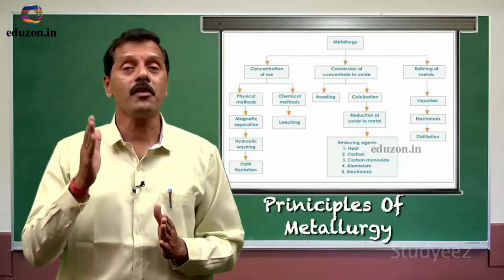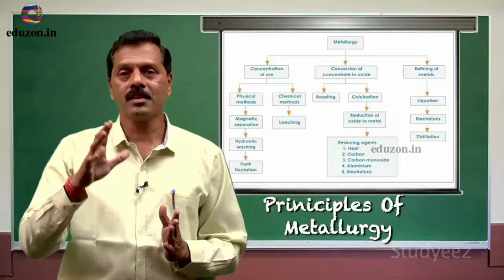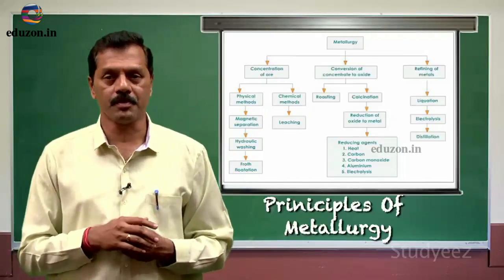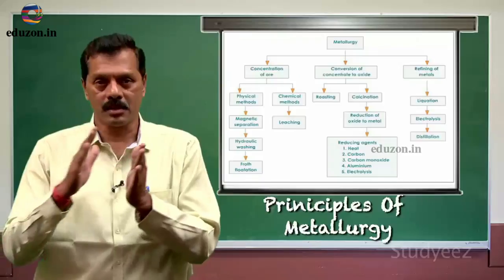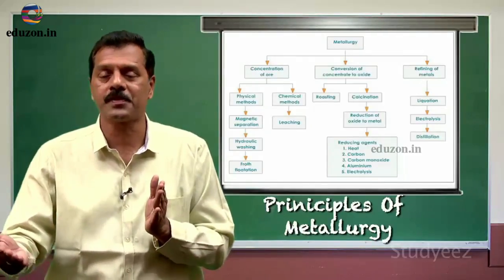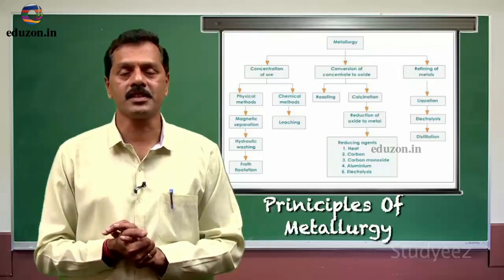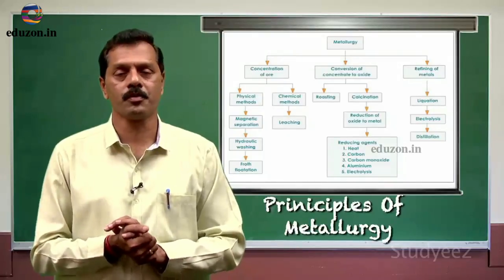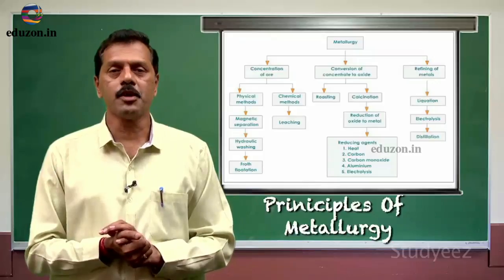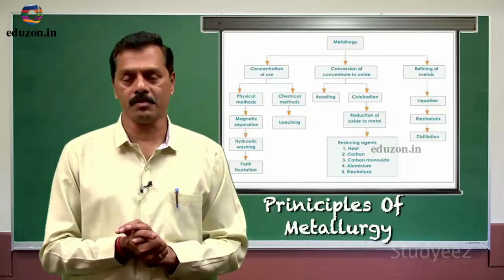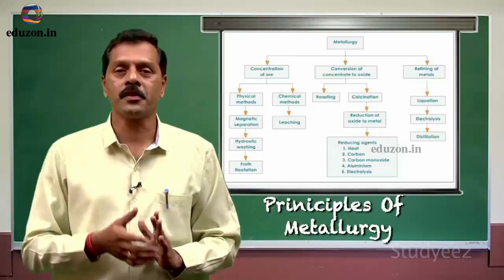Depending upon the type of impurity present in an ore along with the metal, we select the type of removal of impurity. Based upon this, the process of metallurgy is categorized into three different stages: the first is concentration or dressing of the ore, the second is extraction of crude metal, and the third is purification or refining of the metal. These are the three important stages involved in the process of metallurgy.